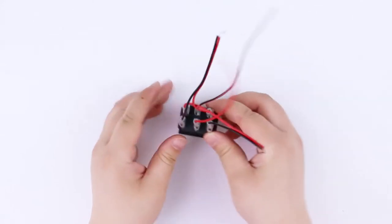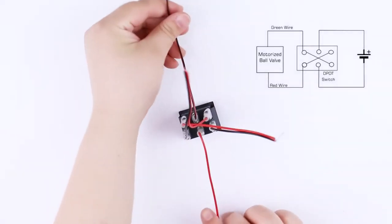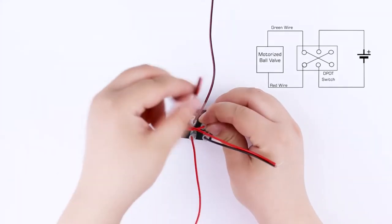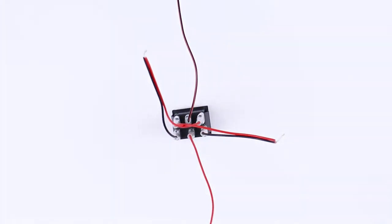Wires in the middle of the switch should be connected to the power supply, and the wires at the end of the switch should be connected to the blue and yellow wires of the valve.